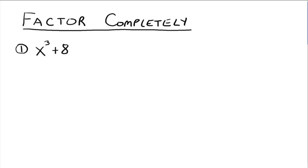Let's look at an example: x cubed plus 8. The question is, how do we factor this completely? You look for the greatest common factor first — is there something common to both terms? No, there is not, but if there was, we would factor it out first. The next question is: how many terms do I have? Two. If you have two terms, you have three options: the difference of two squares, the sum of two cubes, or the difference of two cubes.